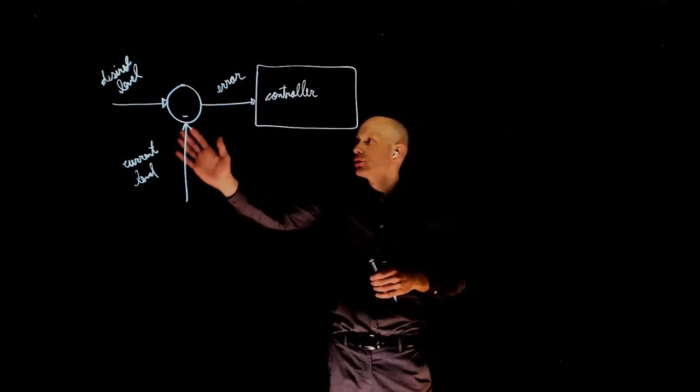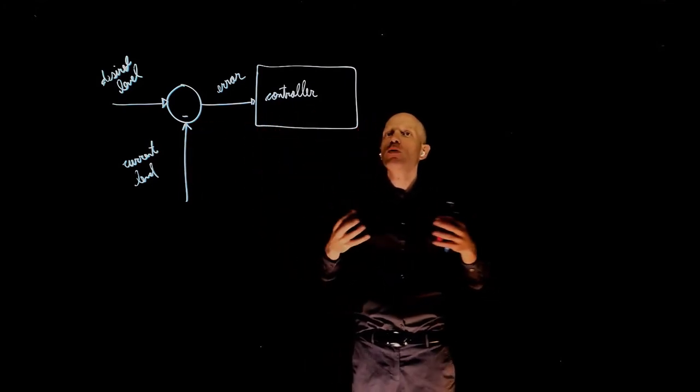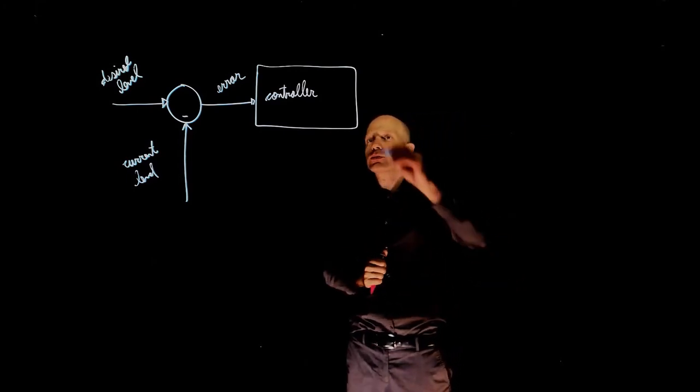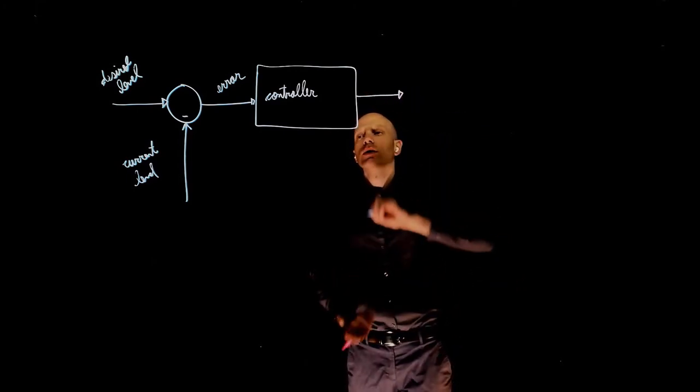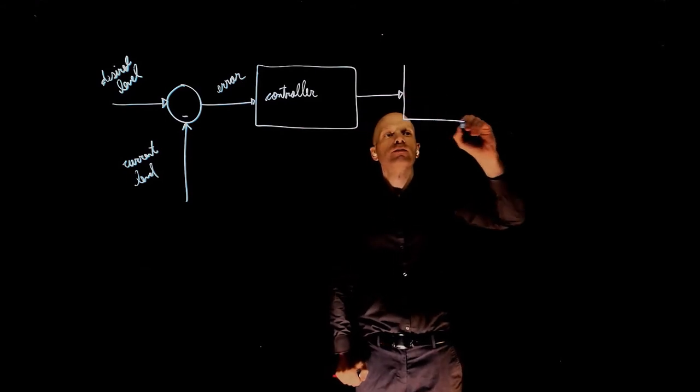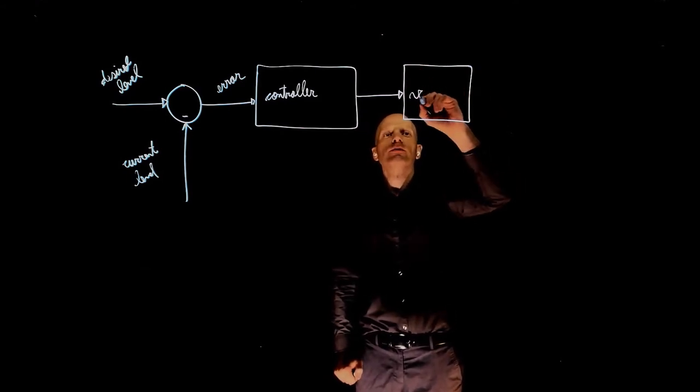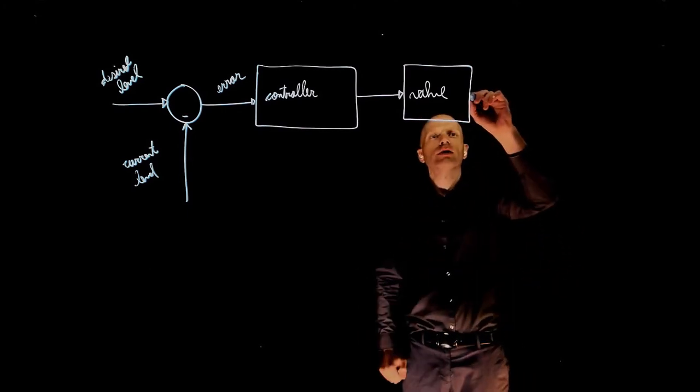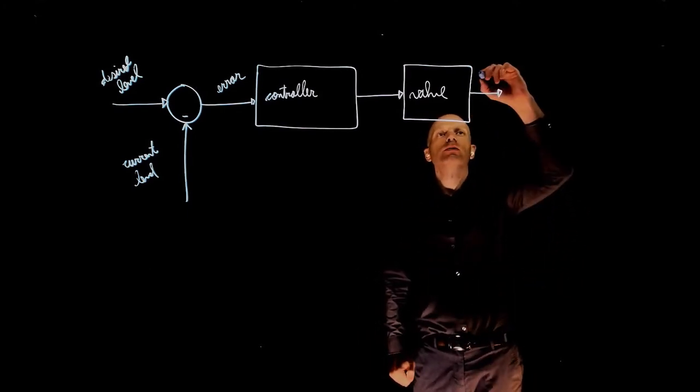The controller, for instance, can determine the opening of a valve that will regulate the water flow. So the output here will be given to a valve to regulate the opening of that valve, that is the output here, the valve opening.